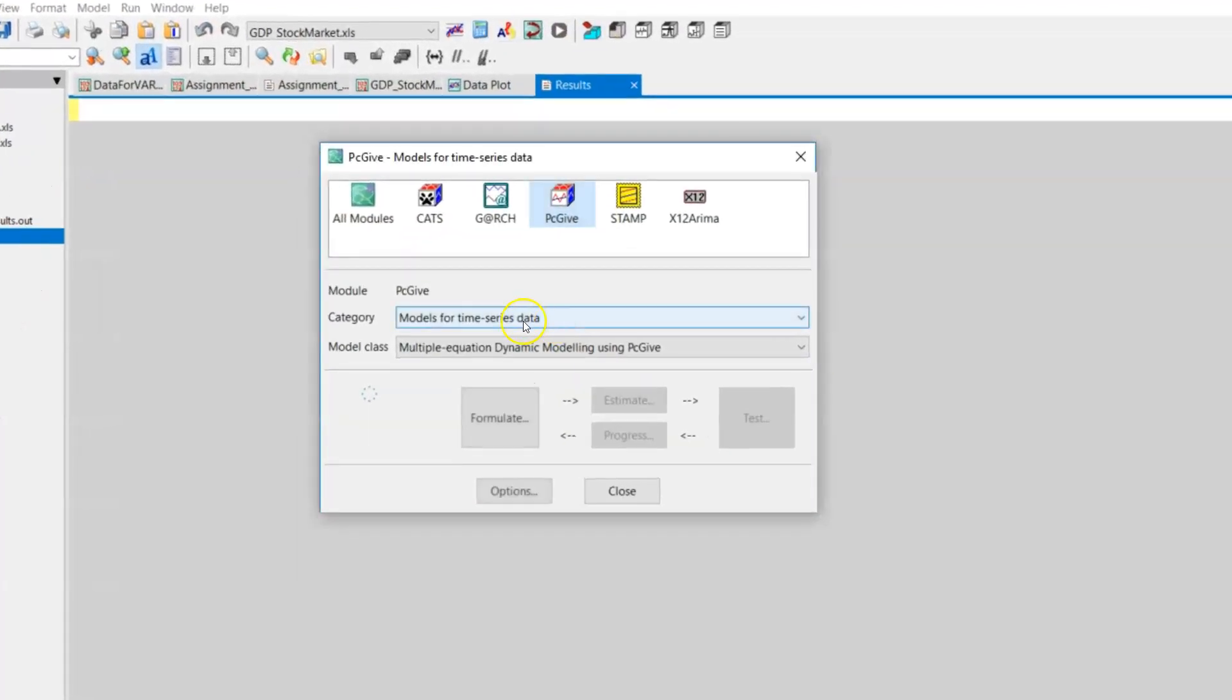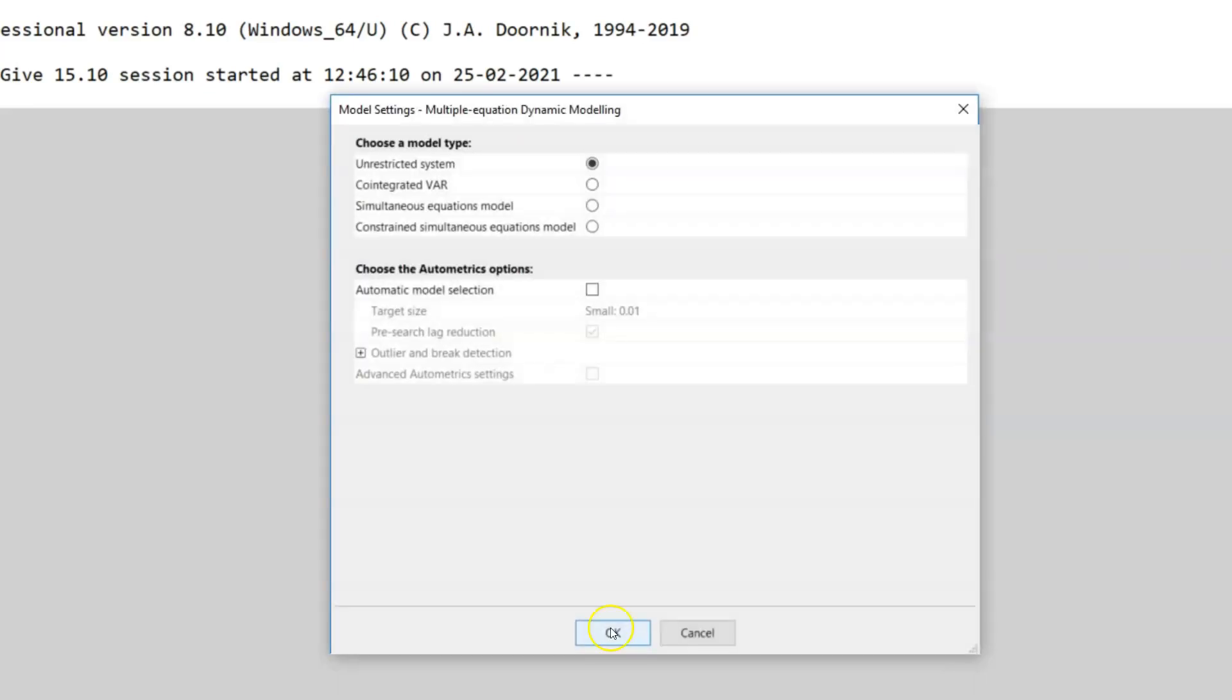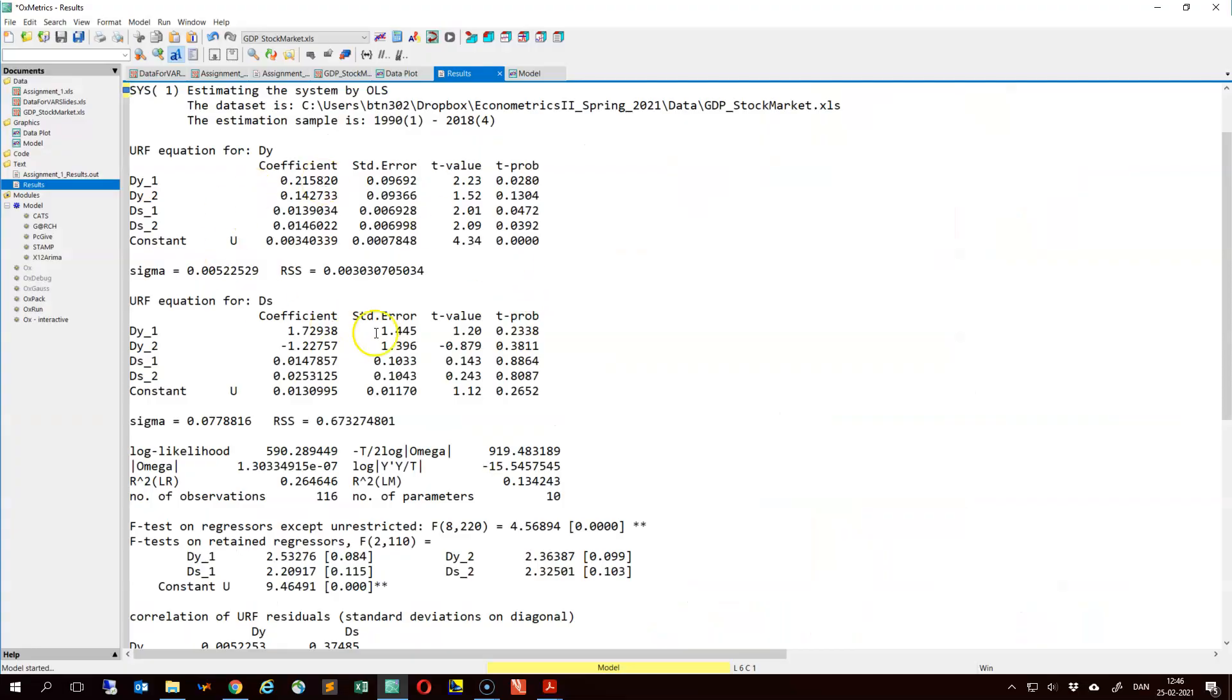We can estimate a VAR(2) model for the growth rate in GDP and the quarterly returns on the S&P 500 index. We can estimate the system unrestrictedly. So it simply means that we estimate each equation by least squares estimation. And let us just consider the sample from 1990 first quarter until the fourth quarter of 2018. So here we get the estimation output. We have the equation for the growth rate in GDP and the equation for the quarterly returns on the S&P 500 index.